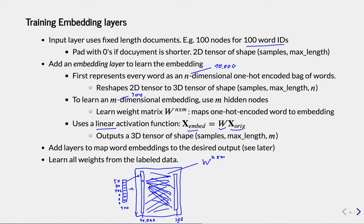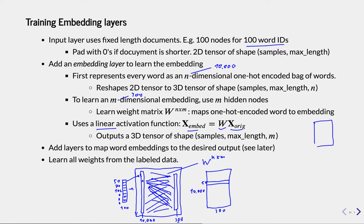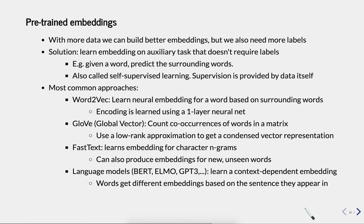This basically ends up being a lookup. The weight matrix is 10,000 × 300, and if you have word number 50, you find the embedding of that word at the 50th row of this matrix. We can represent the entire embedding as a matrix, which also means that if we learn this embedding on one task, we can copy-paste these weights into a new embedding layer and have a pre-trained embedding. Instead of learning a new embedding on a new task, we can take an embedding trained on another task and transfer it.